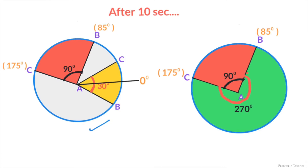This is the initial area of BAC, and after the rotation, the BAC sector will look like this. Looking at the overall sectorial representation, this is the minor sector formed and this is the major sector formed. The angle between B and C in the minor sector will be 90 degrees.